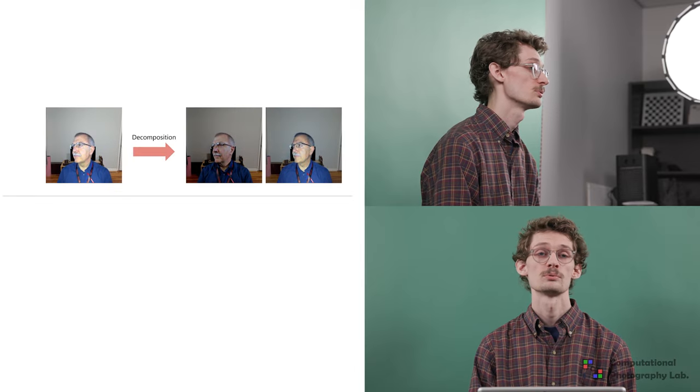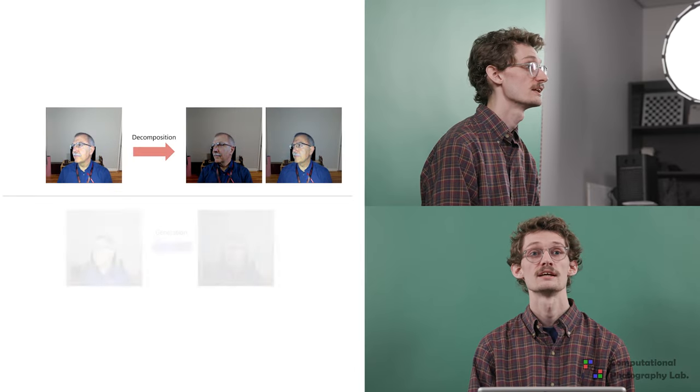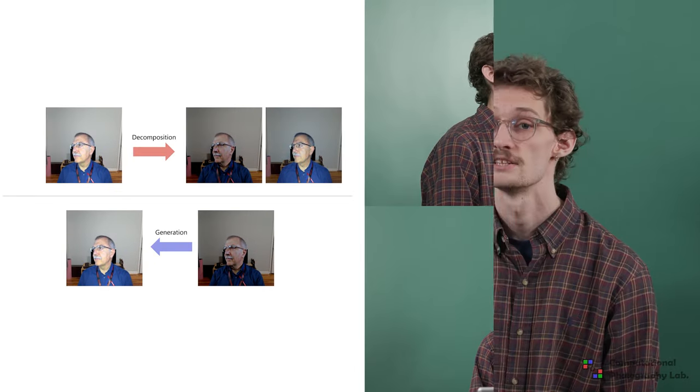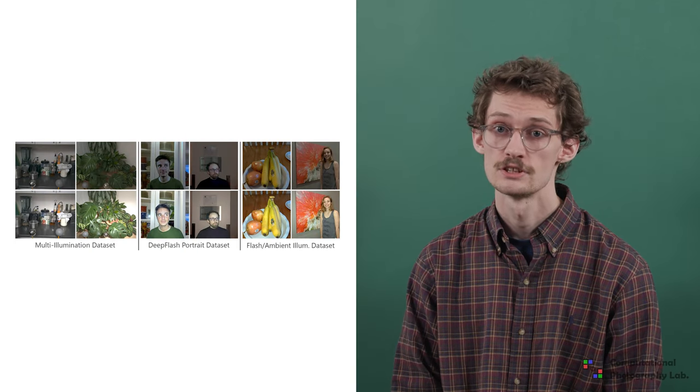Furthermore, we exploit the cyclic relationship between flash photo decomposition and generation to create a source of self-supervision to train our method. We show that our careful formulation allows for the estimation of more pleasing flash and ambient images when compared to state-of-the-art image-to-image translation models.